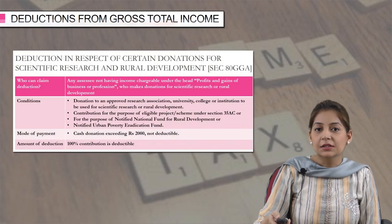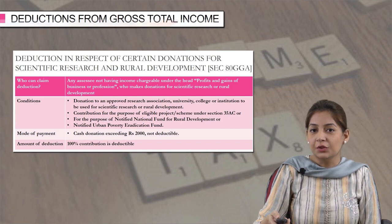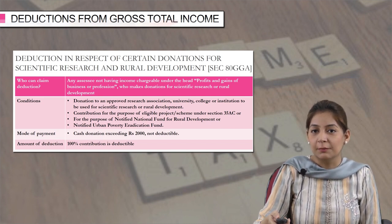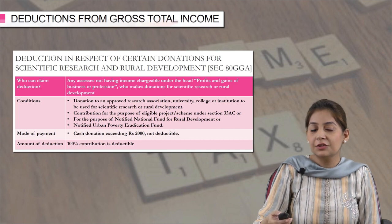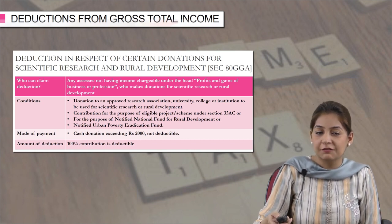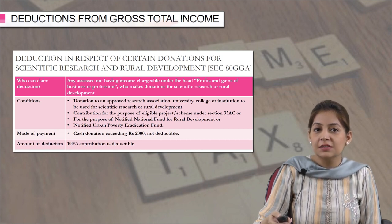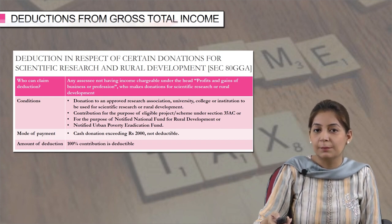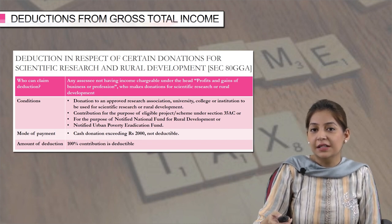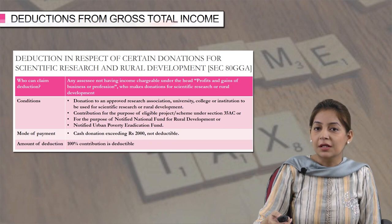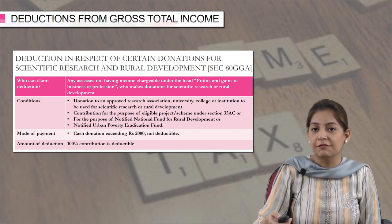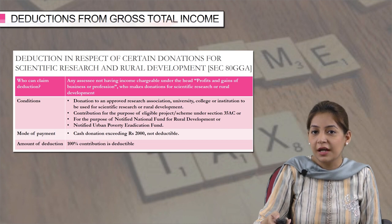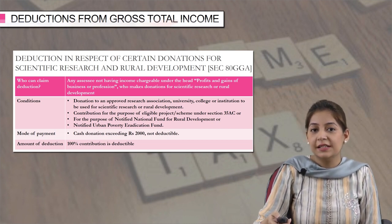Next, the deduction under section 80GGA is in respect of certain donations for scientific research and rural development. We have seen 80G where donation is made to charitable institutions; here we specifically talk about donations made for scientific research and rural development. An assessee can claim this deduction if he has donated any amount for scientific research and rural development, provided he does not have any income under the head profits and gains of business or profession. Because for those, we deal with section 35 under PGBP.